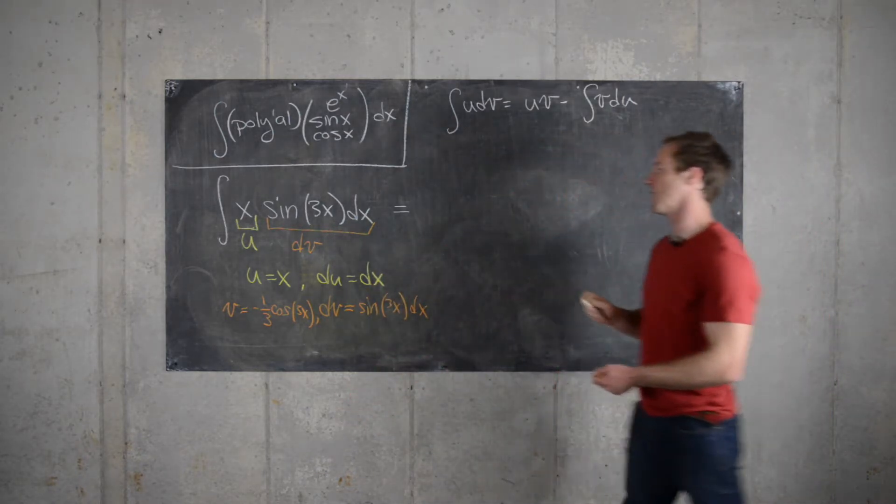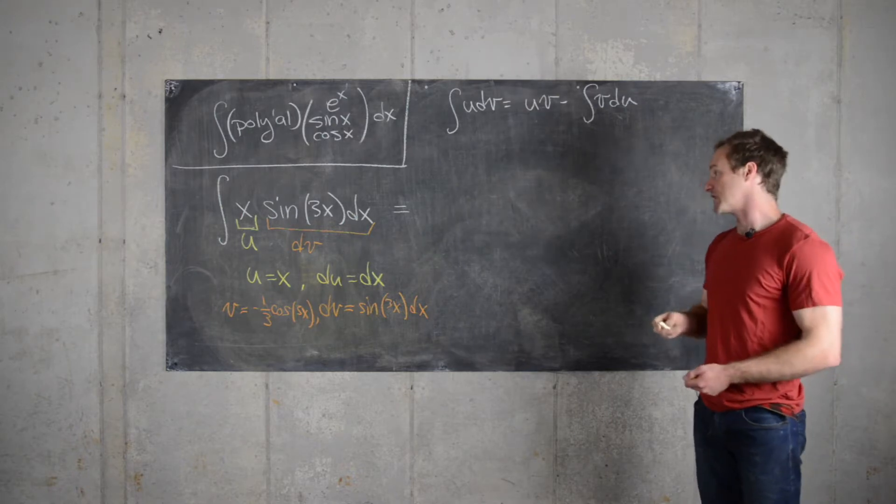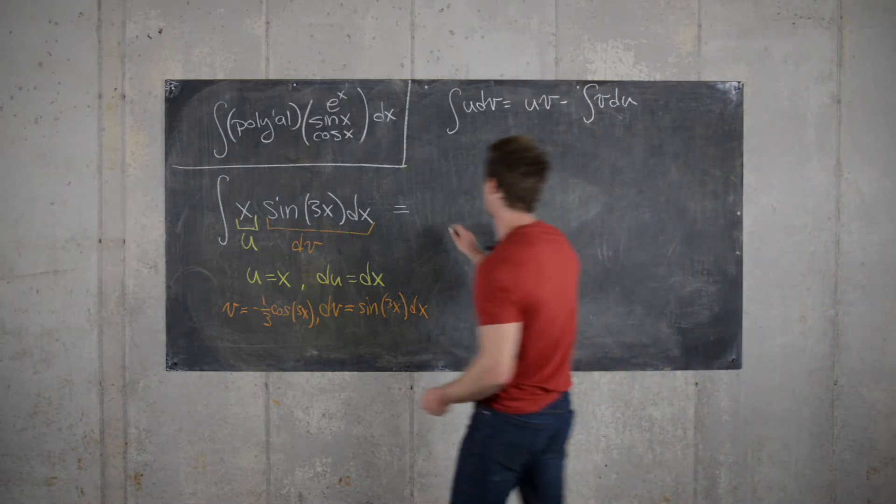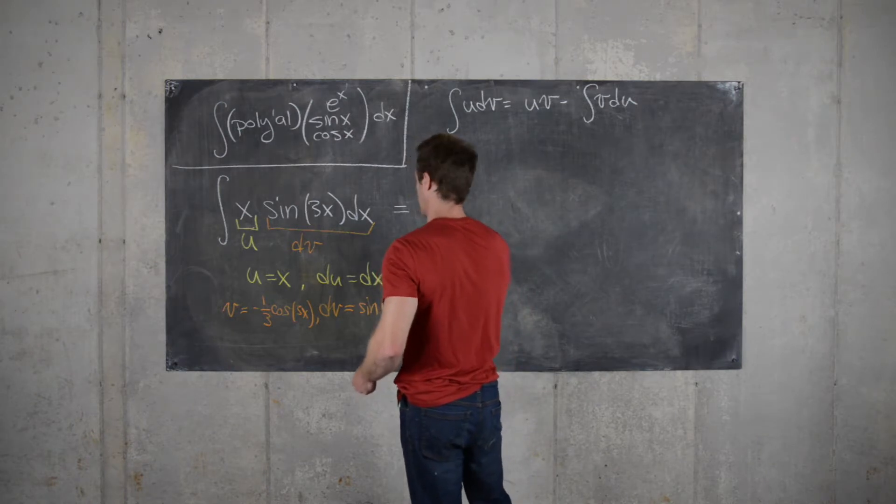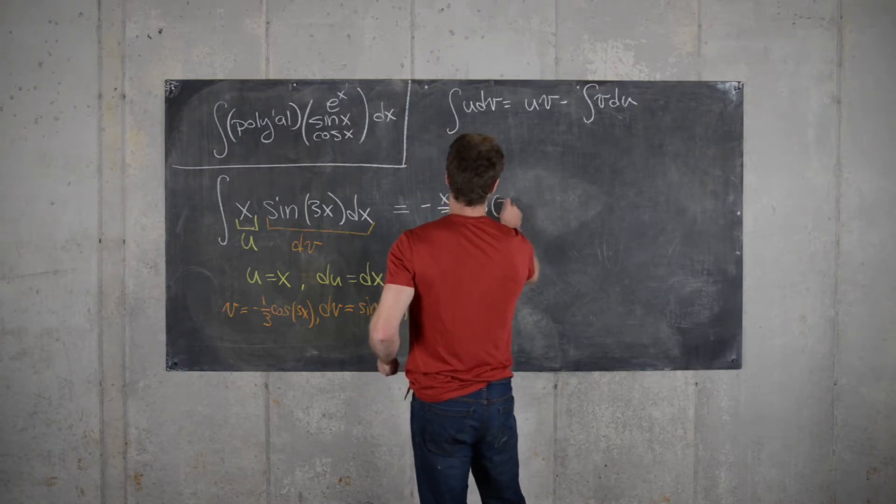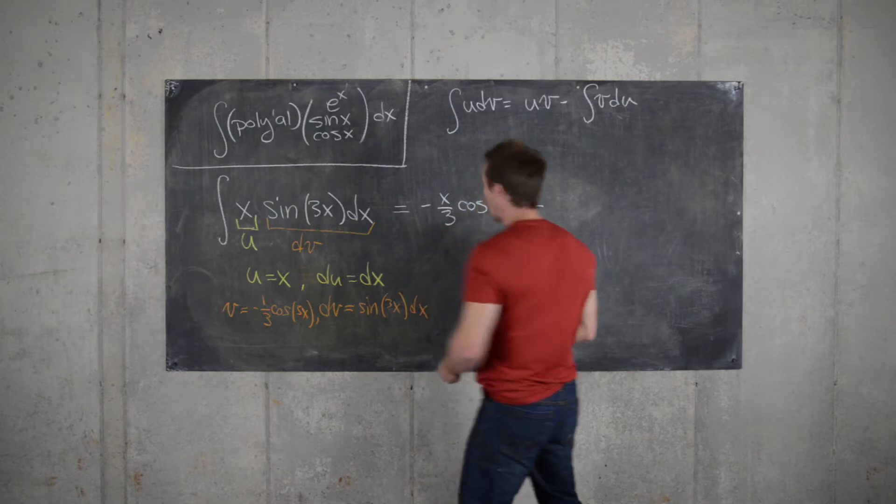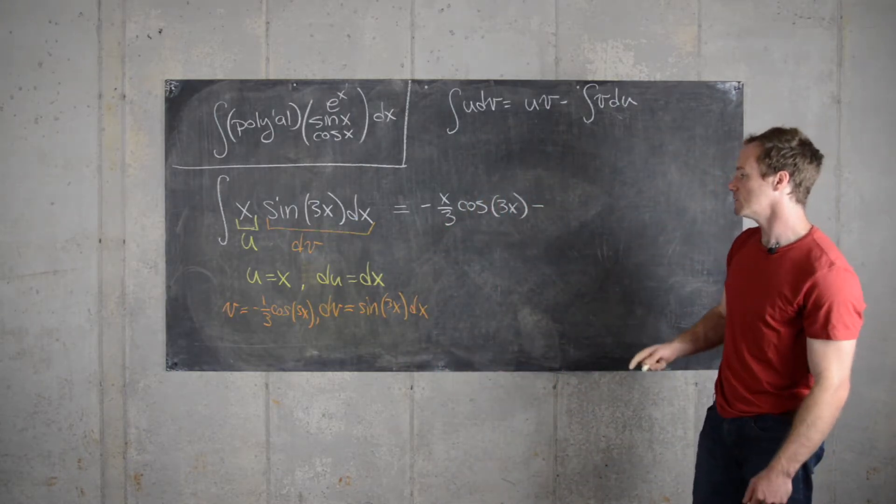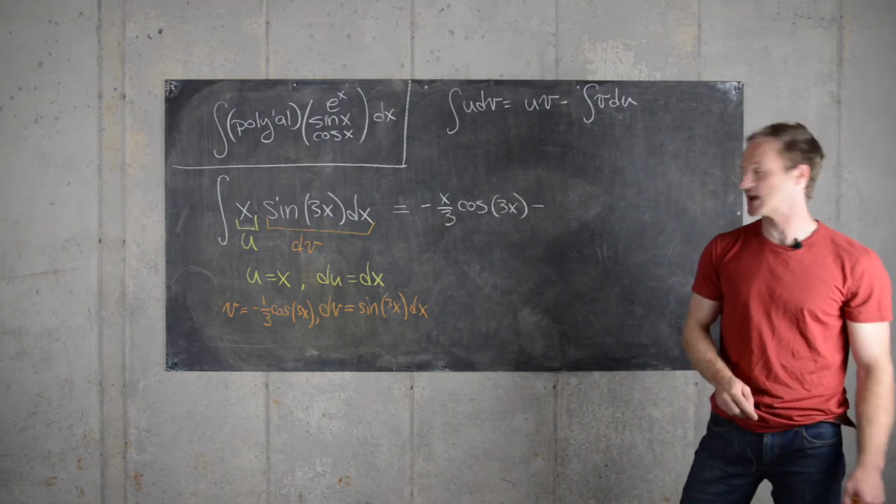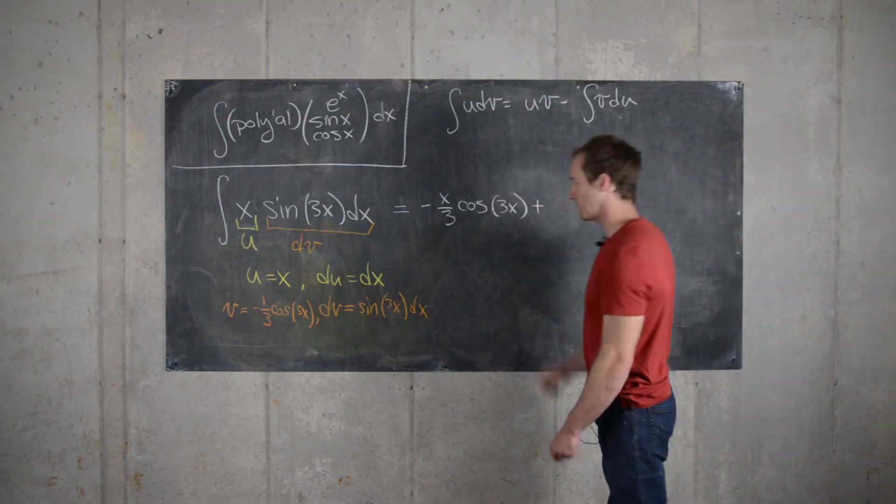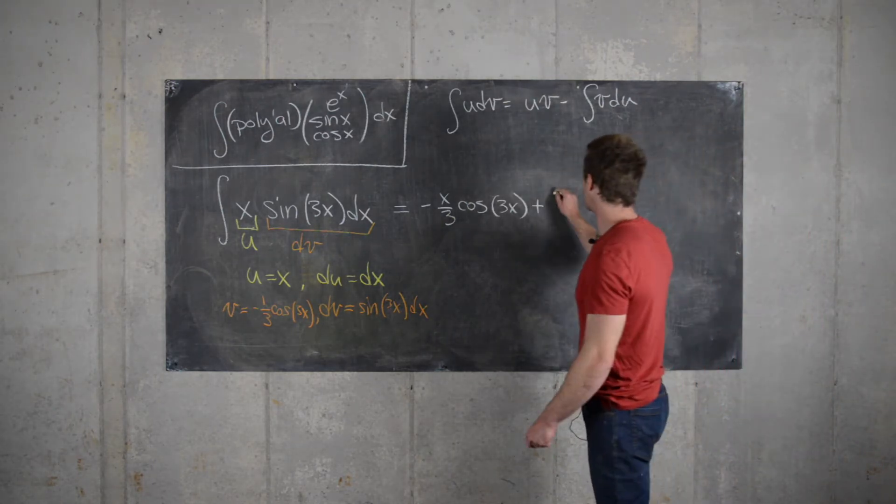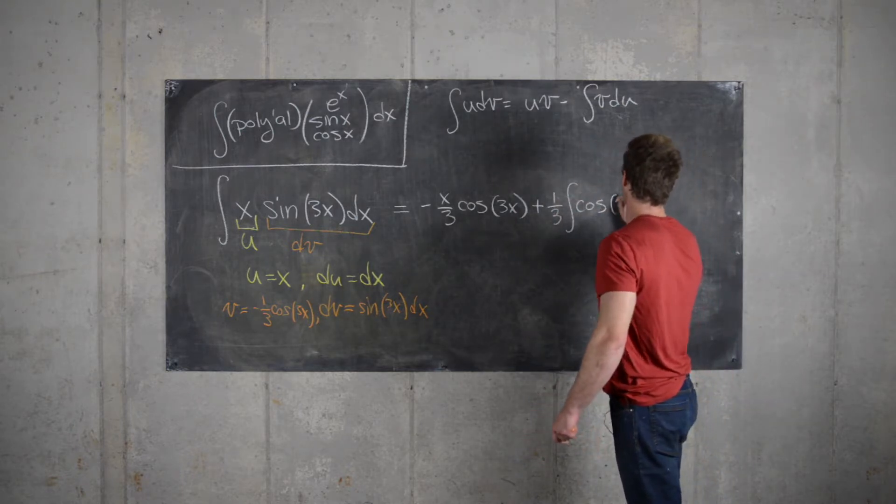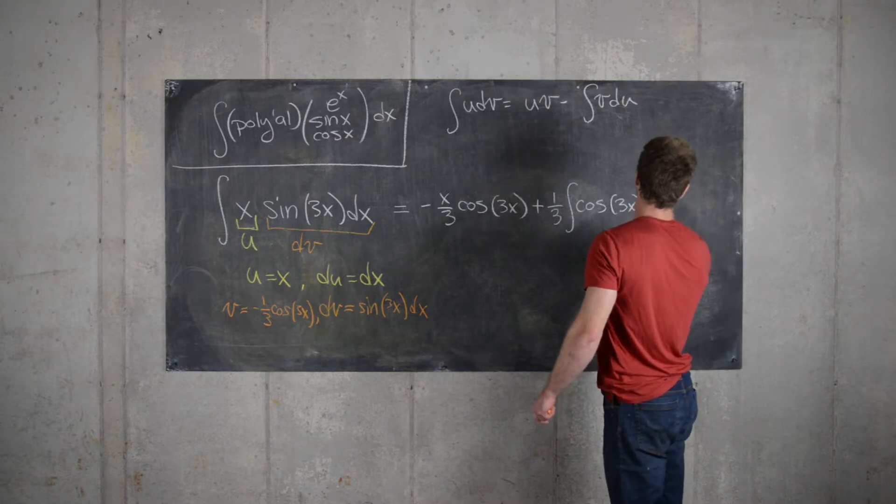So that means the integral of x sine of 3x will be our u times v. So that'll be minus x over 3 cosine 3x minus the integral of v times du. But now notice v has a minus sign built in, so we can change that to a plus. And then v du, we can bring the third out. And that gives us cosine 3x dx.